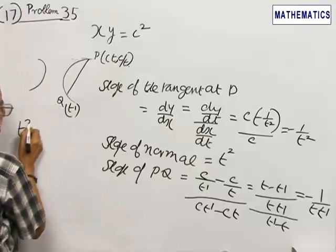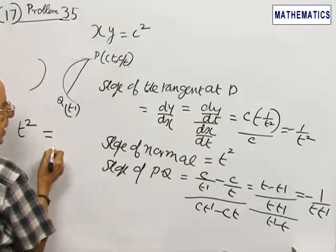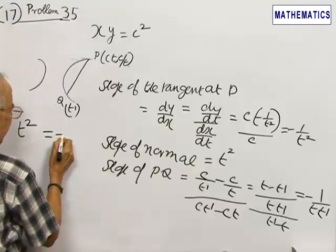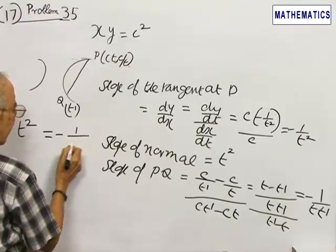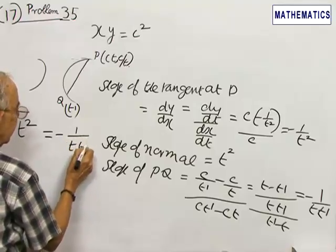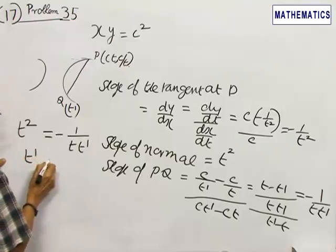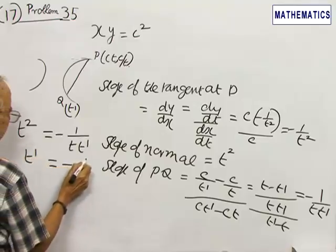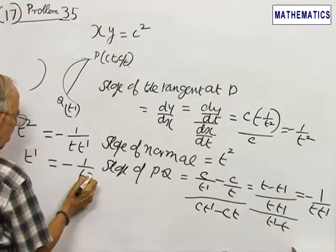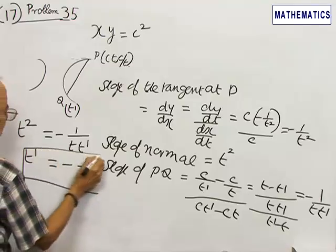So T squared equals minus 1 by T times T dash. Therefore T dash is minus 1 by T cube.